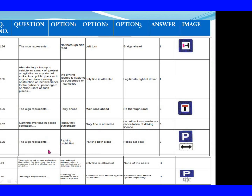Question 138: The sign represents. Option 1: Parking prohibited. Option 2: Parking both sides. Option 3: Police aid post. The right answer is Option 2: Parking both sides. Question 139: The driver of a taxi refusing a road order for a journey for the reason that the distance is short. Option 1: Can attract suspension or cancellation of a driving license. Option 2: Only fine is applicable. Option 3: None of the above. The right answer is Option 1: Can attract suspension or cancellation of a driving license.